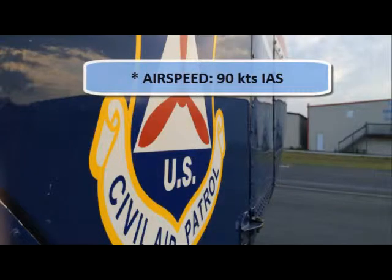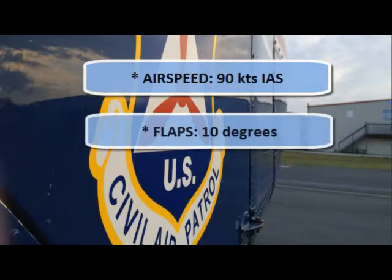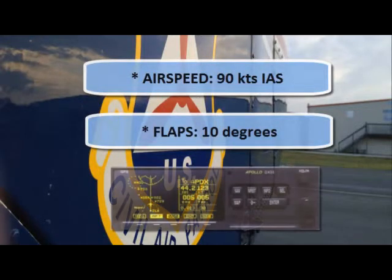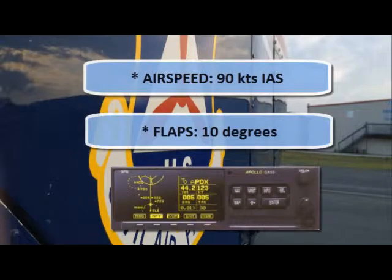Let's get our configuration right. In the Cessna 182, we're going to be using 90 knots as our target airspeed with 10 degrees of flaps. Those flaps give us slightly better forward visibility. We also want our GPS on the split map page.